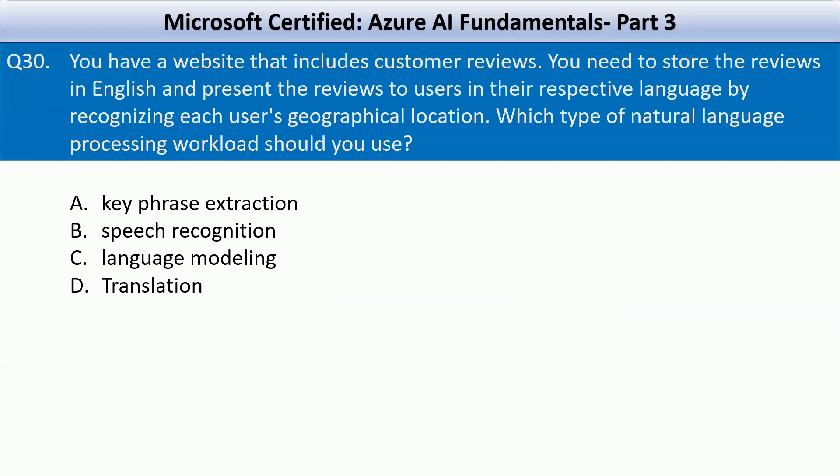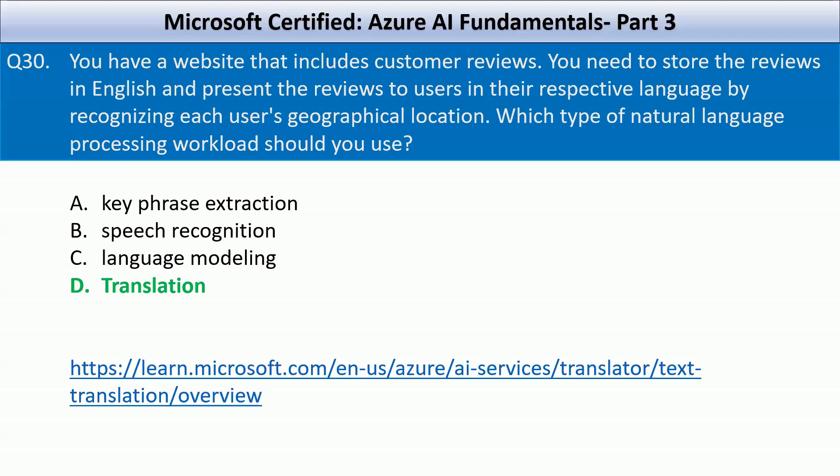Next question: You have a website that includes customer reviews. You need to store the reviews in English and present the reviews to users in their respective language by recognizing each user's geographical location. Which type of natural language processing workload should you use? Your options are key phrase extraction, speech recognition, language modeling, and translation. The correct answer here is translation, also called text translation, which is a cloud-based REST API feature of the Translator service that uses neural machine translation technology to enable quick and accurate source-to-target text translation in real time across all supported languages.